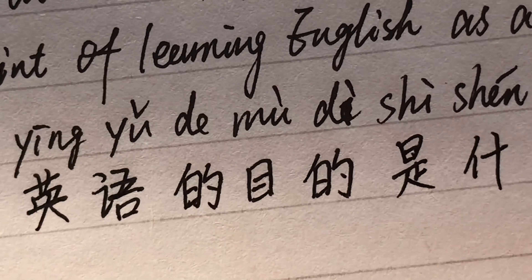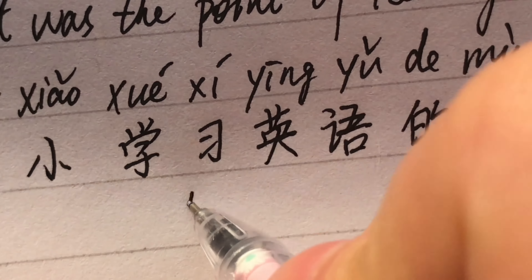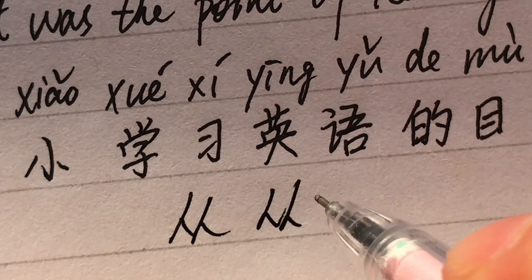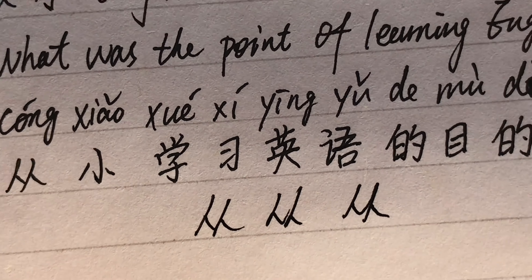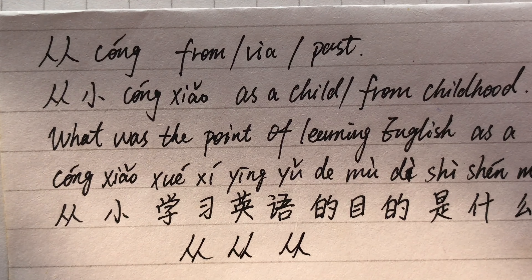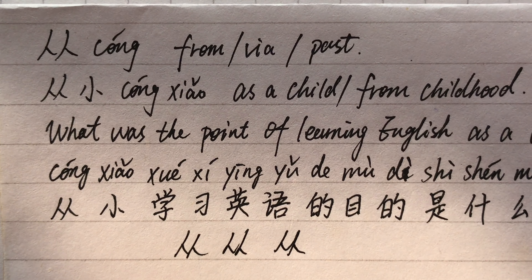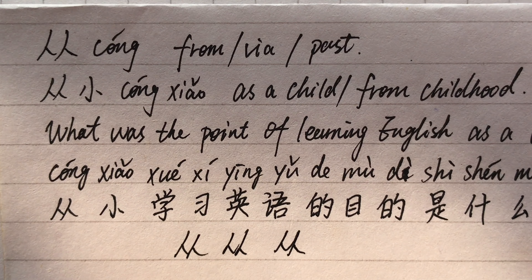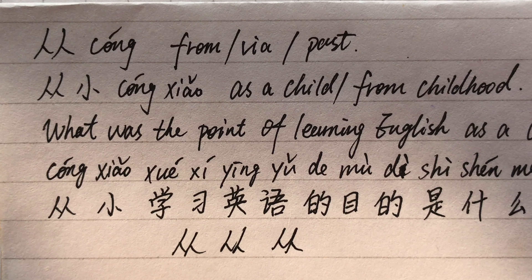My casual handwriting on the character 從. 從: from, while, past. 從小: as a child, from childhood. Example sentence: 從小學習英語的目的是什麼呢? — What was the point of learning English as a child?